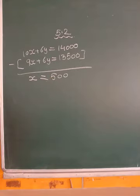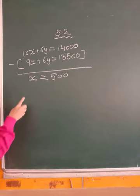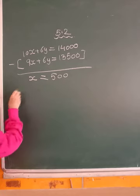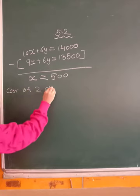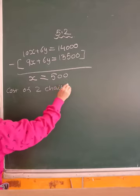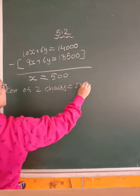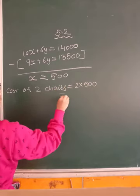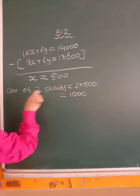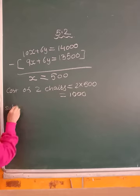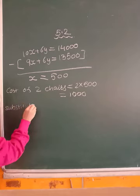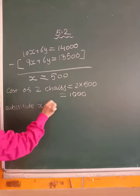Now what is asked at the end? Find the price of 2 chairs and 2 tables. We got price of 1 chair. So cost of 2 chairs is 2x which is equal to 2 into 500 which is equal to 1,000. So this is cost of 2 chairs.